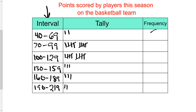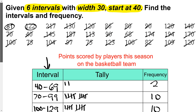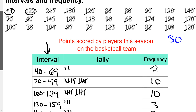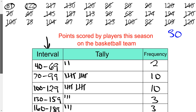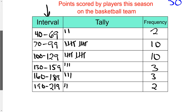Pause the video and check your tallies against mine. I should have ended up with frequencies of 2, 10, 10, 3, 3, and 2. We can add these up to check against the total number of data points — there are 30 data points in three rows of 10. Adding up: 2 plus 10 is 12, plus 10 is 22, plus 3 is 25, plus 3 is 28, plus 2 is 30. So we have a total of 30 data points — we're good.